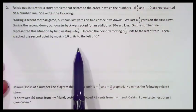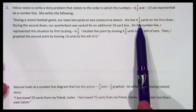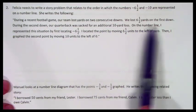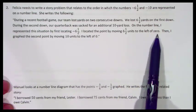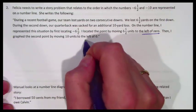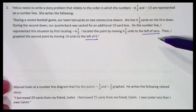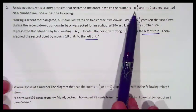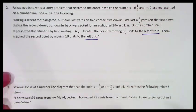In this problem, Felicia needs to write a story problem that relates to the order in which negative six and one-half and negative ten are represented on a number line. She writes: During a recent football game, our team lost yards on two consecutive downs. We lost six and a half yards on the first down. During the second down, our quarterback was sacked for an additional ten-yard loss. I would say yes, that Felicia did this right.